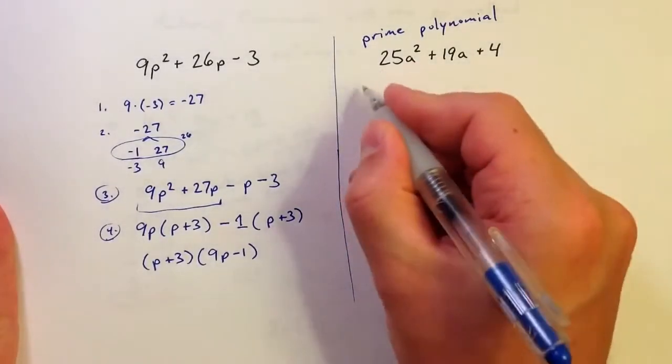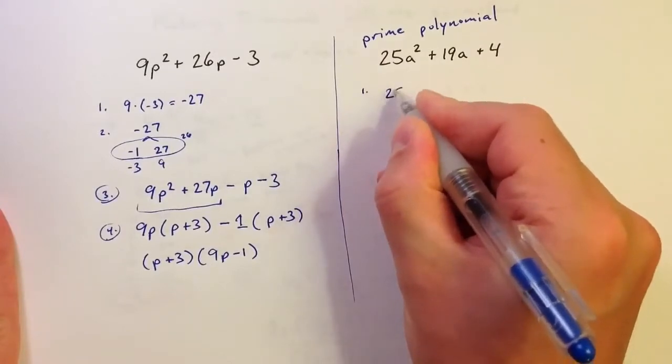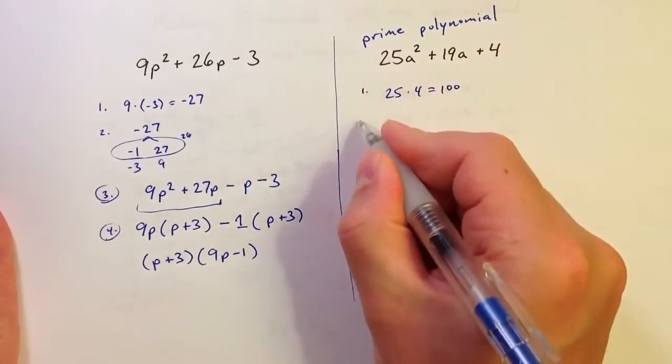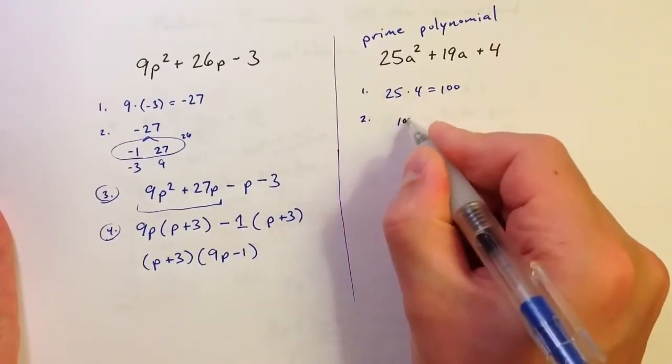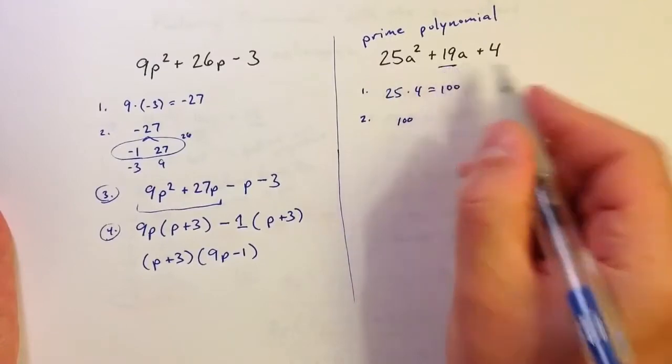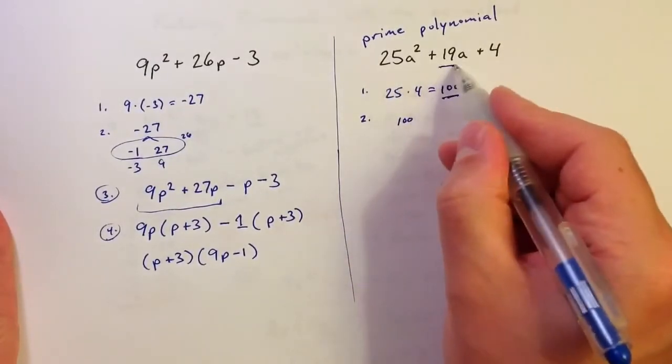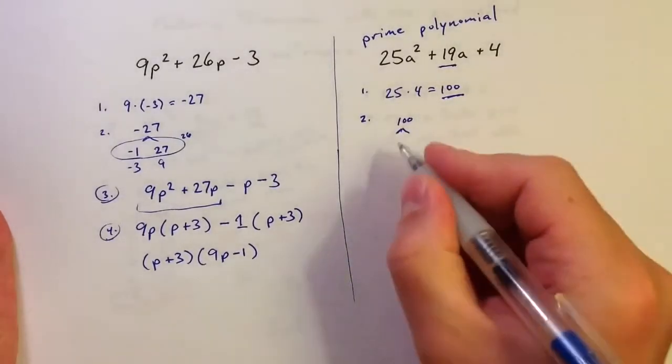So to see why, we can quickly just check this out. If I multiply a times c, 25 times 4 is 100. And then what I want to look for are the factor pairs of 100. I want to try to find a factor pair of 100 that adds to equal 19. Since 100 is positive, a times c is positive, and 19 is positive, I know that the factors are going to be positive factors if they exist.